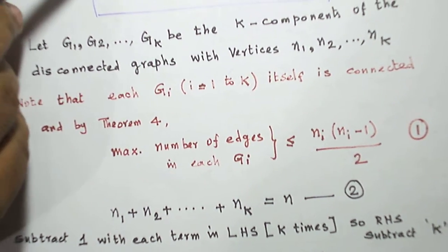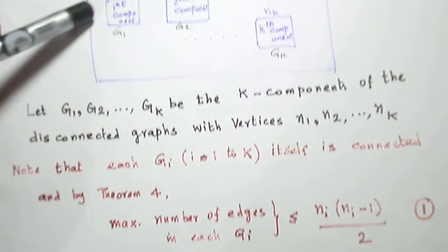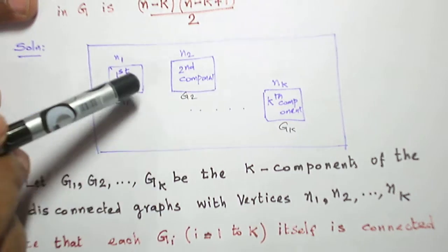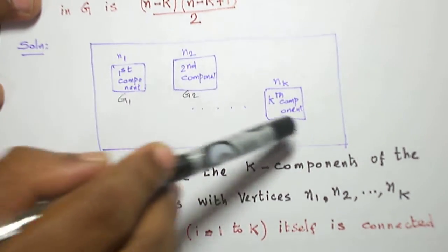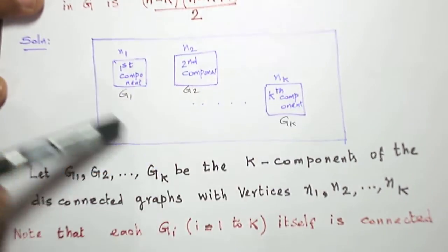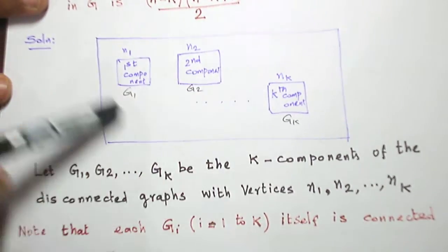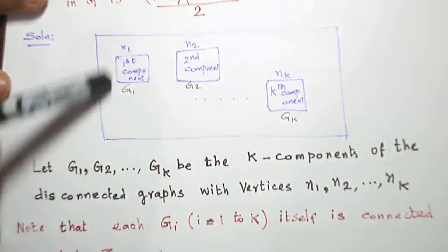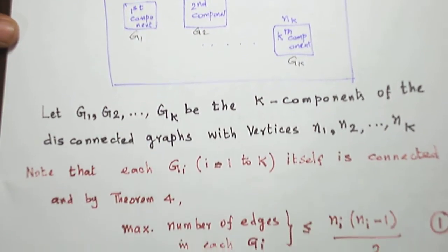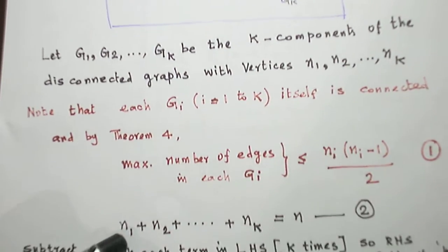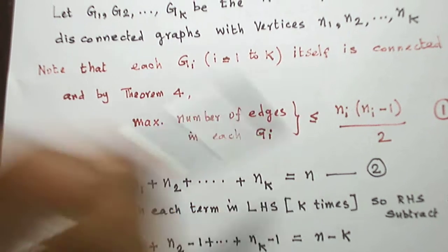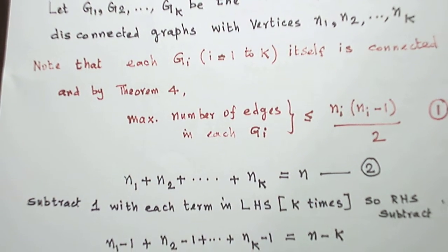When I add all the number of vertices in each component, I get the total number of vertices in the whole graph. So I write this equation: n1 + n2 + ... + nk = n.